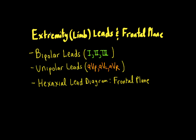After watching this video, you should be able to describe the ECG extremity or limb leads and the frontal plane. The extremity leads can be divided into two major categories: the bipolar leads — leads 1, 2, and 3 — and the unipolar leads — leads AVF, AVL, and AVR.